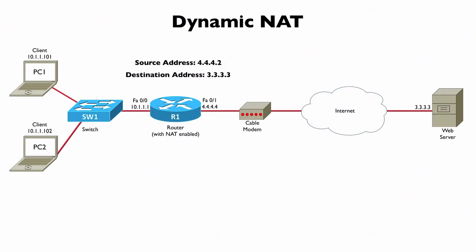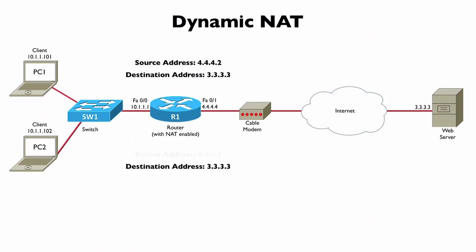The source address is changed in this example to 4.4.4.2 — notice this is not the IP address of the physical interface on R1, it was just one of a pool of publicly routable IP addresses. When PC2, which has a different inside local address, sends to the same web server, it has a source address of 10.1.1.102, same destination, and its source address is translated to inside global address 4.4.4.3.